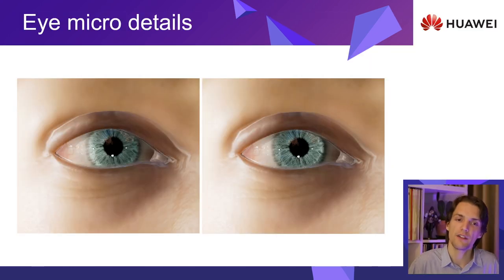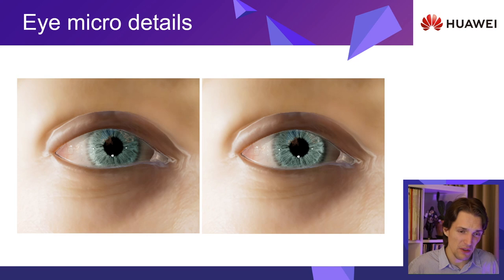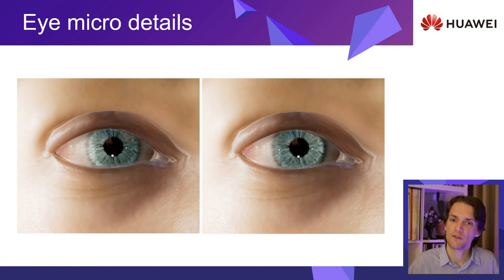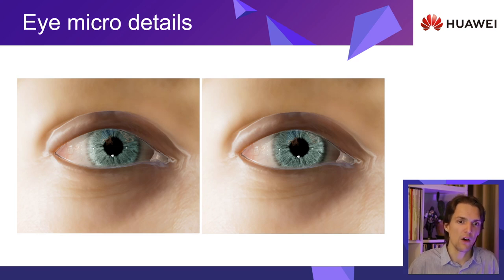The uncanny valley is a term coined to describe that uneasy feeling that comes with looking at a not-quite-realistic-enough depiction of a human. While that term has been widely overused, what it tries to describe is real. Through millennia of evolution, and from our very first breath, we have been conditioned to unconsciously recognize faces and the millions of small details in them. Anything missing or slightly off will send alarm bells ringing.